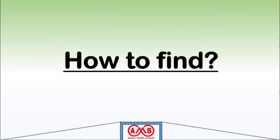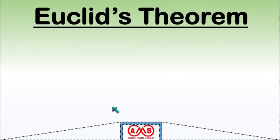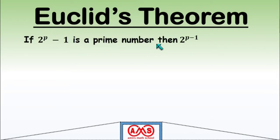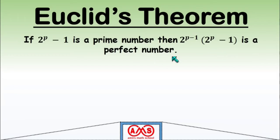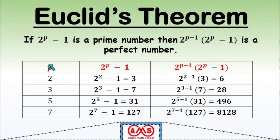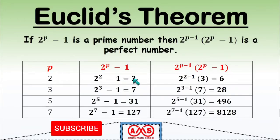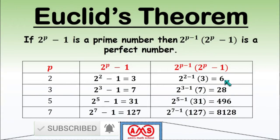Now let's see how to find any perfect number. According to Euclid's theorem, if 2^p − 1 is a prime number, then 2^(p−1) × (2^p − 1) is a perfect number. For example, when p = 2, we get 2^2 − 1 = 3, which is prime. So 2^(2−1) × 3 = 2 × 3 = 6, which is a perfect number — and we already know that 6 is a perfect number.